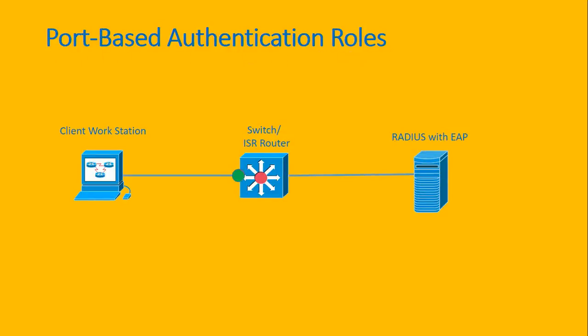The first role in port-based authentication is the authentication server. The authentication server is the RADIUS server where authentication of the client actually takes place. It could be ACS, ISE, Windows NPS. Here you define the specific EAP methods you want to allow and settings such as certificate policies. You also have the local database with client credentials to be checked, or it could be linked to an external database such as Active Directory.